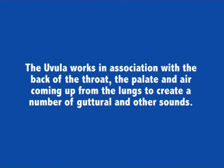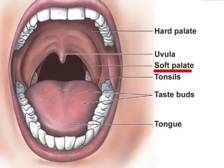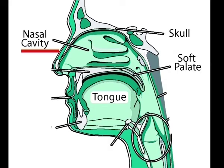The soft palate is movable, consisting of muscle fibers covered with mucous membrane. It is responsible for closing off the nasal passages during the act of swallowing and also for closing off the airway. The nasal cavity is the area which houses both the nostrils and is an important resonance spot for the speech sounds.